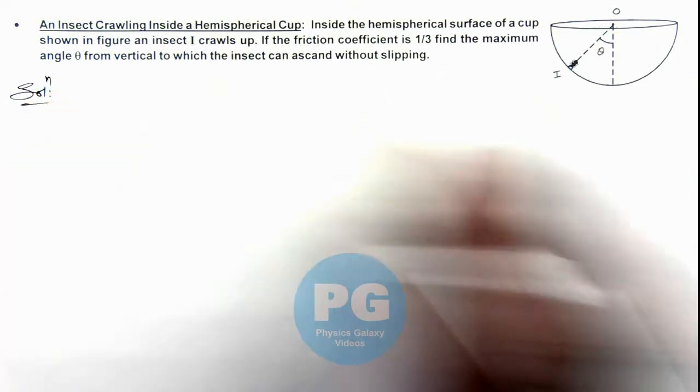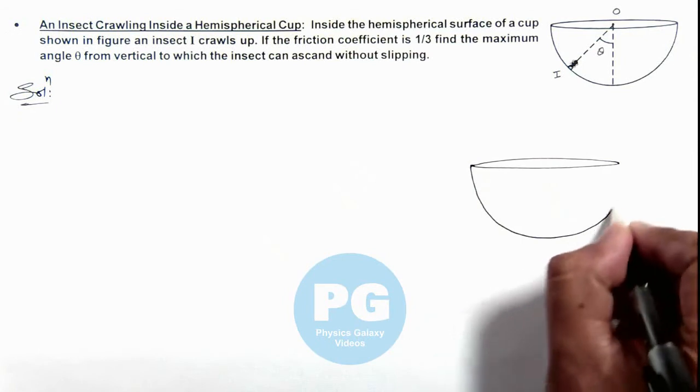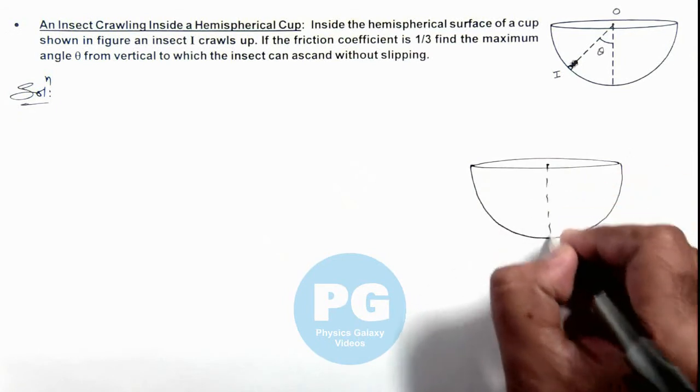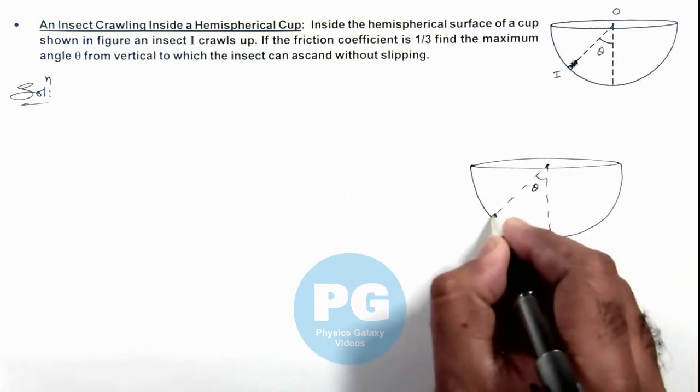To analyze the situation, let us redraw it. This is the hemispherical cup in which, up to an angle theta, the insect reaches.